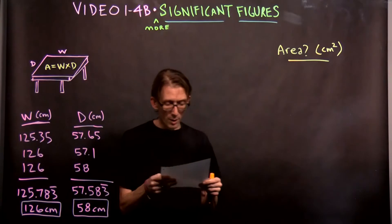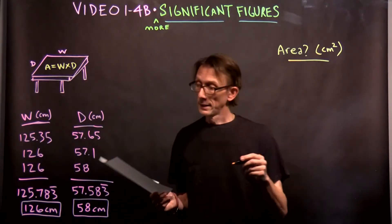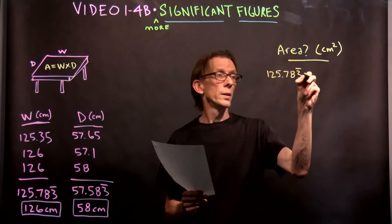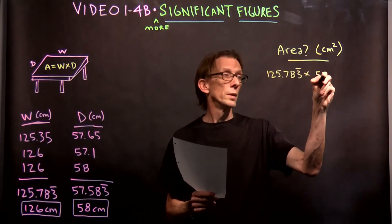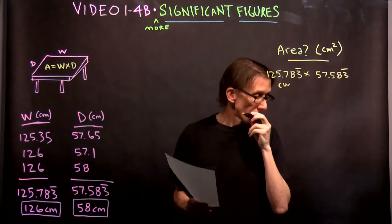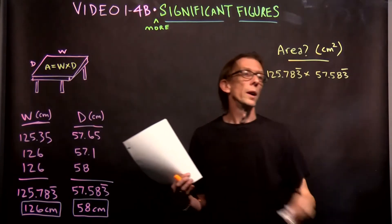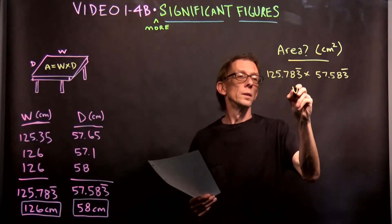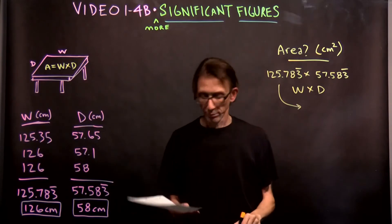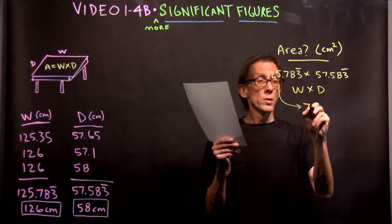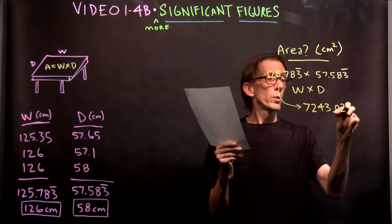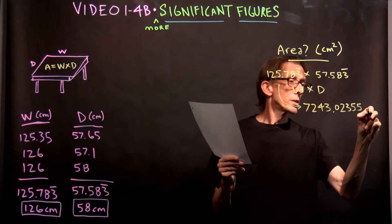Okay? If we take 125.783 repeating times 57.583 repeating, right? That's, wipe this clean, a little bit confusing. Right? Width times depth. Okay? We get this number here. 7,243.02355 centimeters squared.